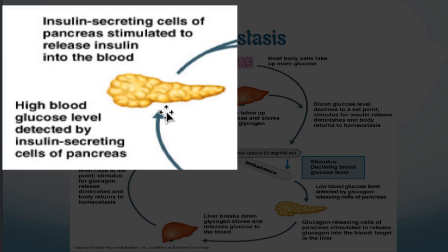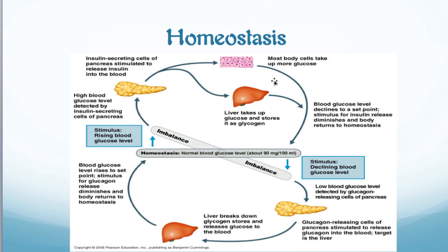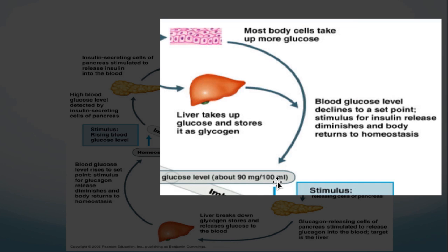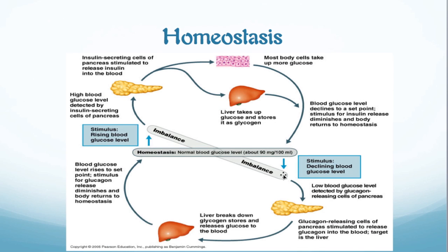Those beta cells are both the receptors and the control center. They decide glucose is getting too high in the bloodstream and release insulin. Insulin goes to the cells of the body and tells them to open their glucose channels and take in glucose. The liver is good at this because it wants to store glucose, turning it into glycogen — our glucose storage molecule in animals. Most cells of the body take up more glucose, reducing it in the bloodstream, which is very good.